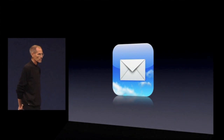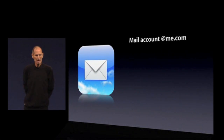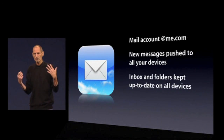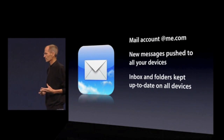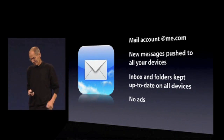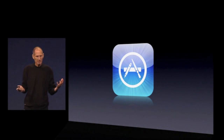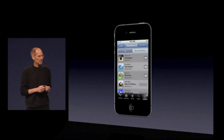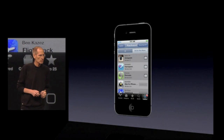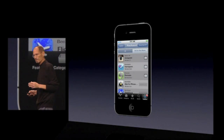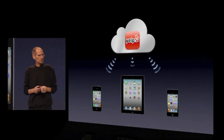And then we have Mail. Mail is in the best shape of all, but it's even better now. We give you a mail account at me.com. Your new messages are pushed to all your devices, and your inbox and folders are all kept up to date on all devices — and no ads. We build products that we want for ourselves, and we just don't want ads. The App Store: you've bought a lot of apps, and you can buy them directly on your devices. For all your purchase history, you can see it on all your devices. If the app you want isn't there, the cloud downloads it to all your devices.